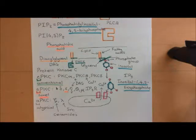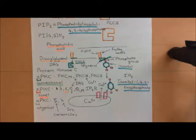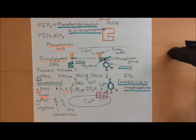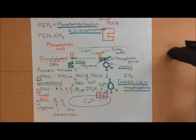Bradykinin activates the GQ cascade, which leads to the production of a calcium signal along with diacylglycerol. This is capable of activating a huge number of different protein kinases. However, the one that seems to be important for the phosphorylation of TRPV1 is protein kinase C epsilon, which is a novel protein kinase C, and therefore isn't activated by calcium, but is only activated by diacylglycerol.